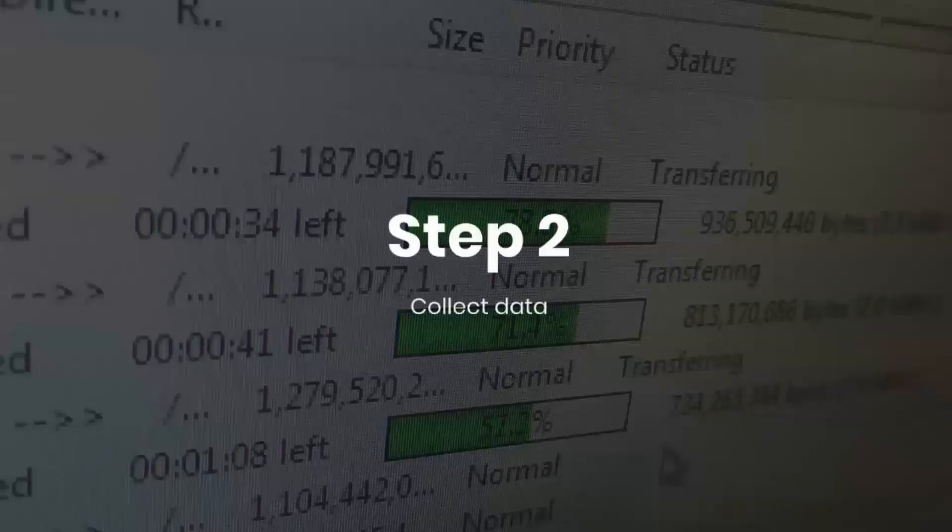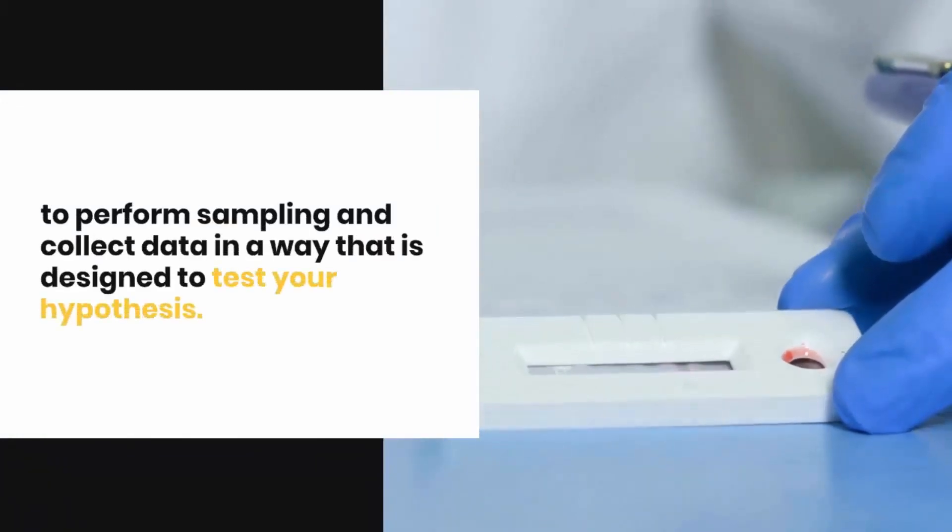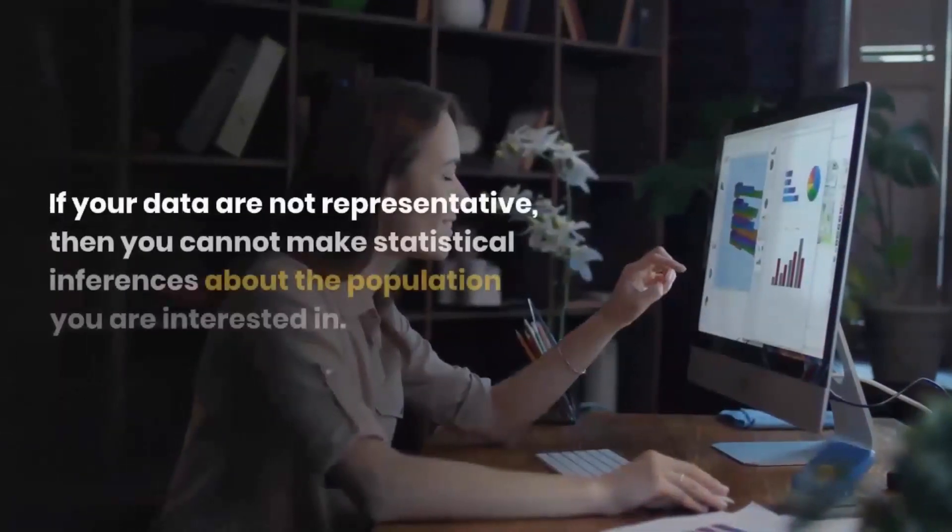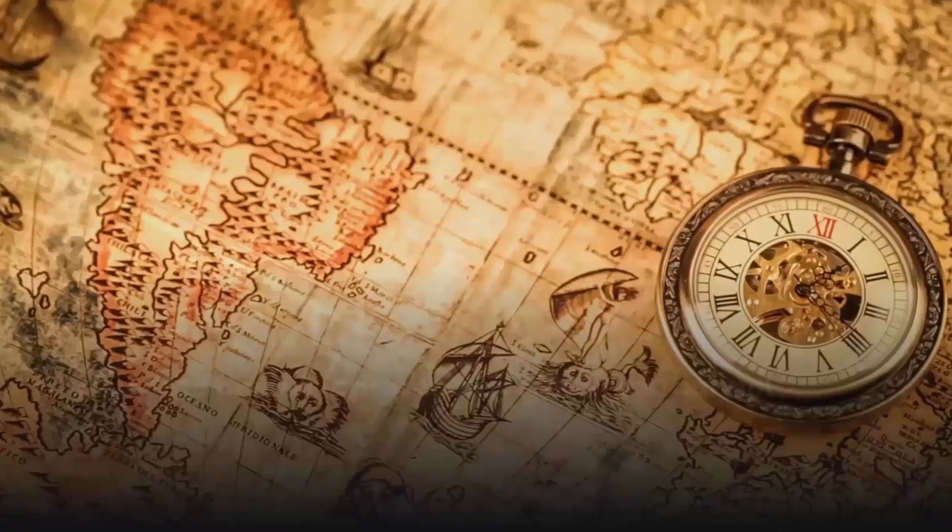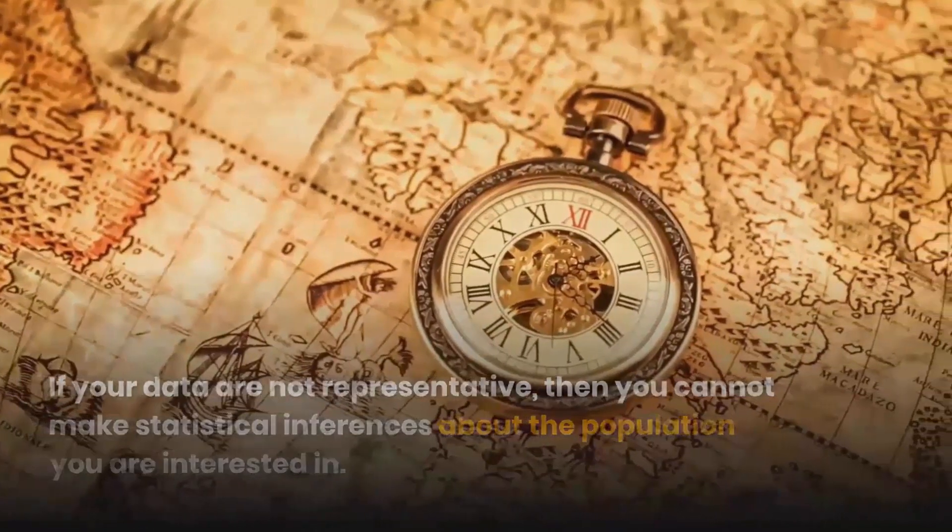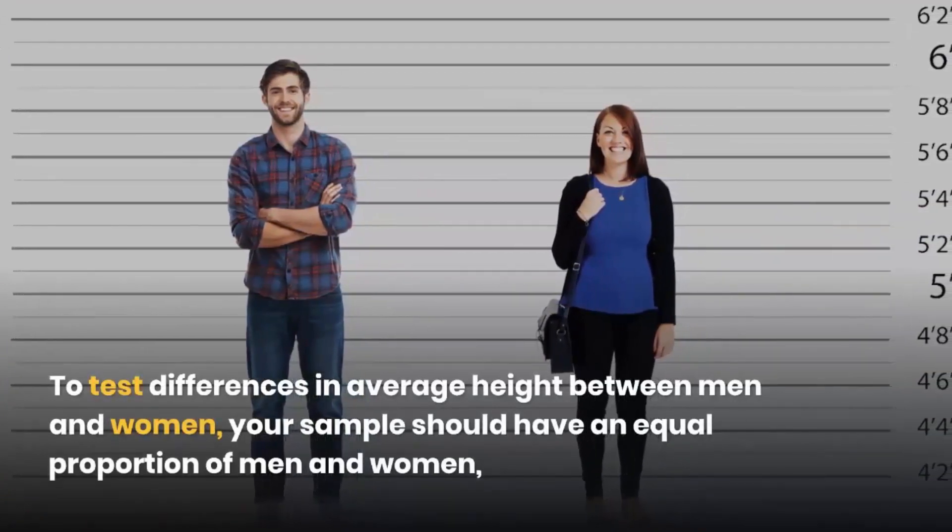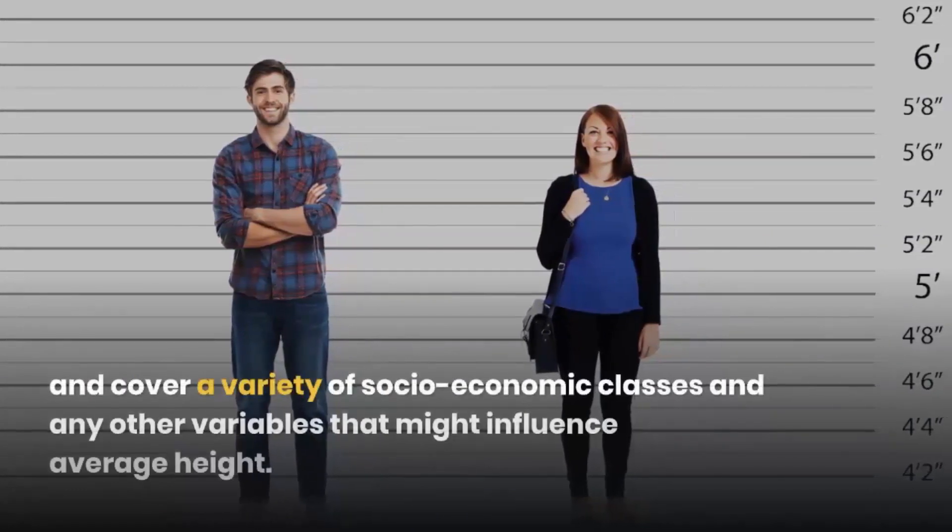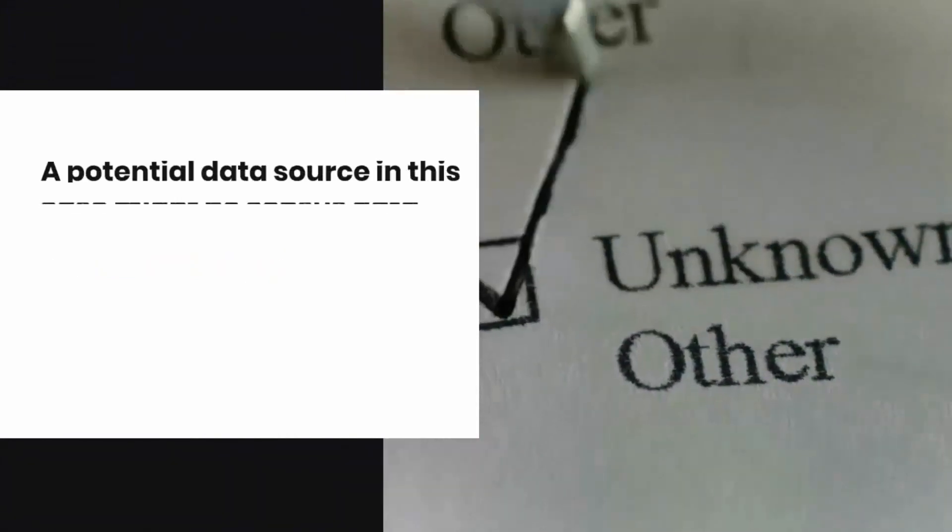Step 2: Collect data. For a statistical test to be valid, it is important to perform sampling and collect data in a way that is designed to test your hypothesis. If your data are not representative, then you cannot make statistical inferences about the population you are interested in. To test differences in average height between men and women, your sample should have an equal proportion of men and women and cover a variety of socioeconomic classes and any other variables that might influence average height. You should also consider your scope: worldwide or for one country. A potential data source in this case might be census data.